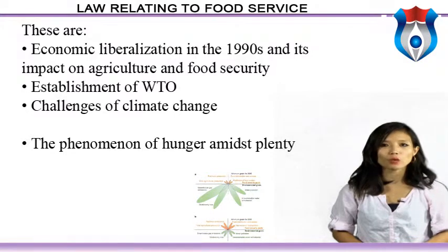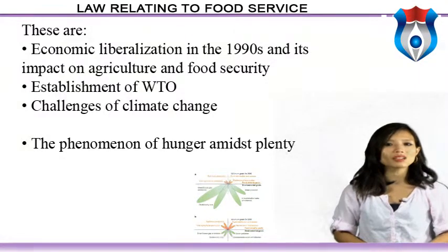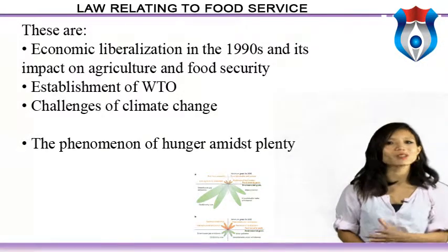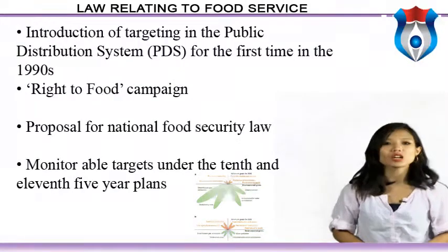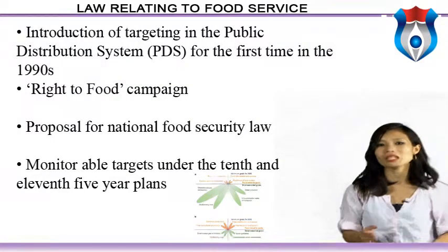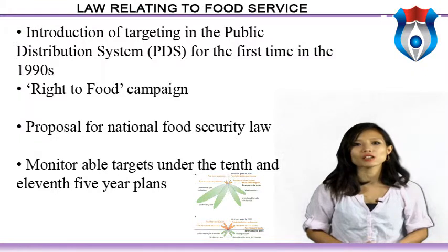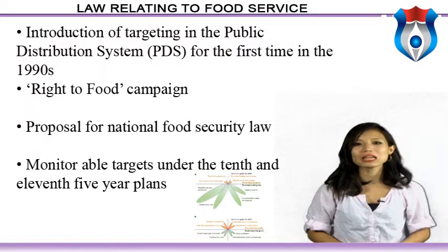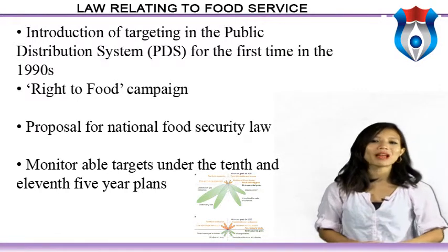Other emerging food security issues include challenges of climate change, the crisis of the three Fs — food prices, fuel prices and financial crisis — the phenomenon of hunger amidst plenty with accumulation of stocks, introduction of targeting in the Public Distribution System (PDS) for the first time in the 1990s, the right to food campaign, and Supreme Court orders on midday meal schemes, along with the proposal for a national food security law and monitorable targets under the 10th and 11th Five Year Plans.